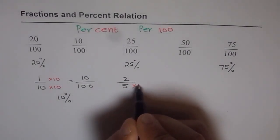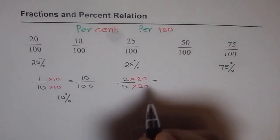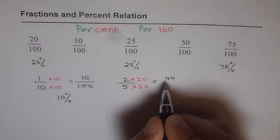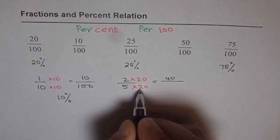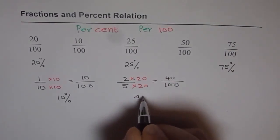5 times 20 will give me 100. So we will multiply both numerator and denominator by 20. And then what are we going to get? So 2 times 20 is 40. So we get what? We get 40 percent.